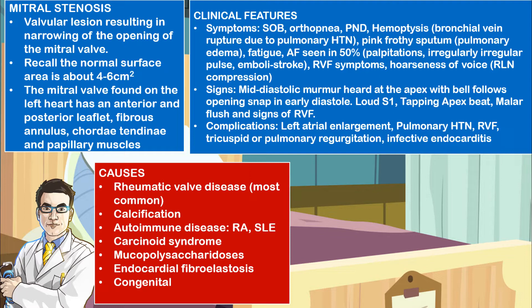Signs include a mid-diastolic murmur heard best at the apex with the bell, which follows an opening snap in early diastole. You may also have a loud S1 heart sound, a tapping apex beat, malar flush, and some signs of right ventricular failure.